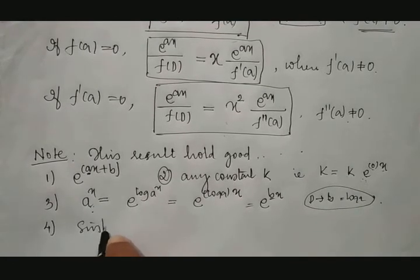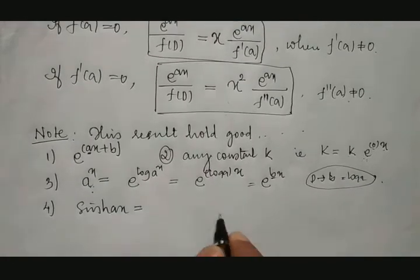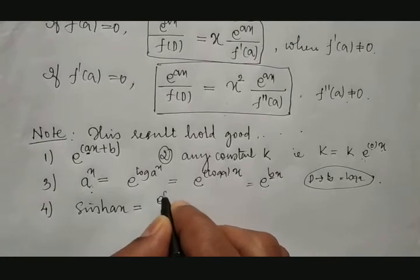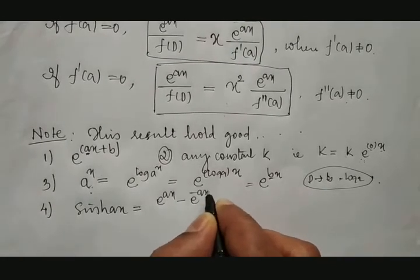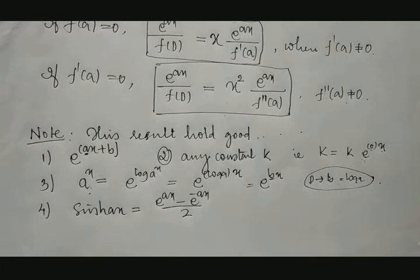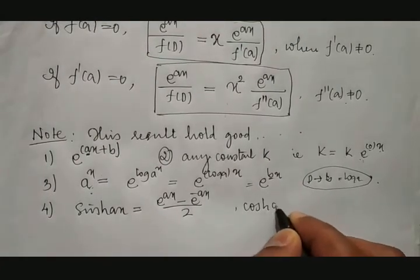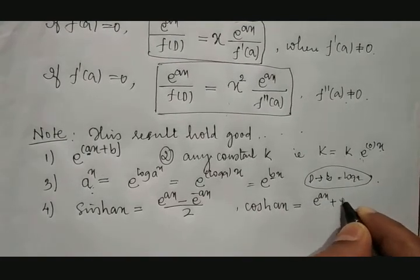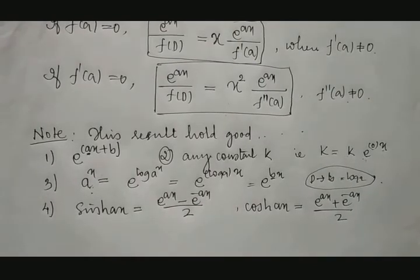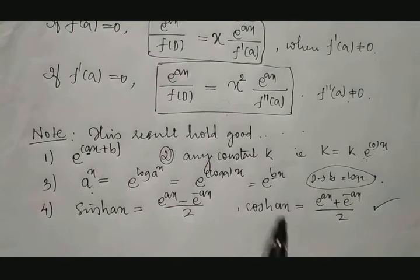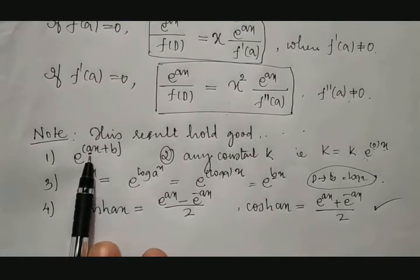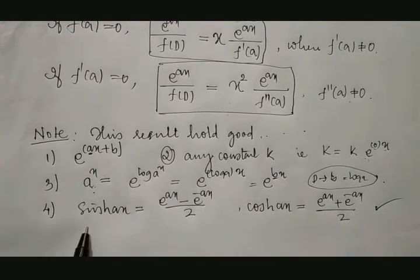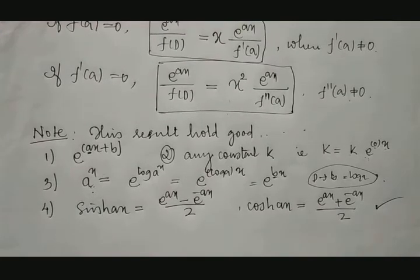For sinh(ax), we directly connect it as (e^(ax) − e^(−ax)) / 2. Similarly, cosh(ax) can be taken as (e^(ax) + e^(−ax)) / 2. So this process applies to direct exponentials, any constants, a^x patterns, and hyperbolic functions.